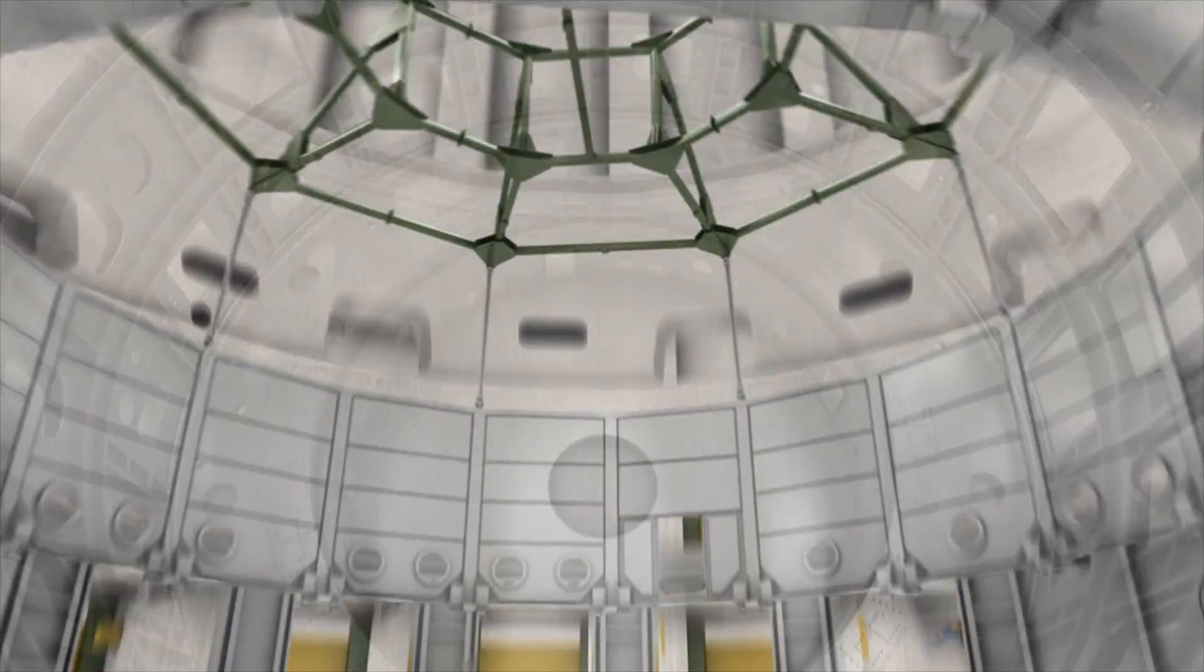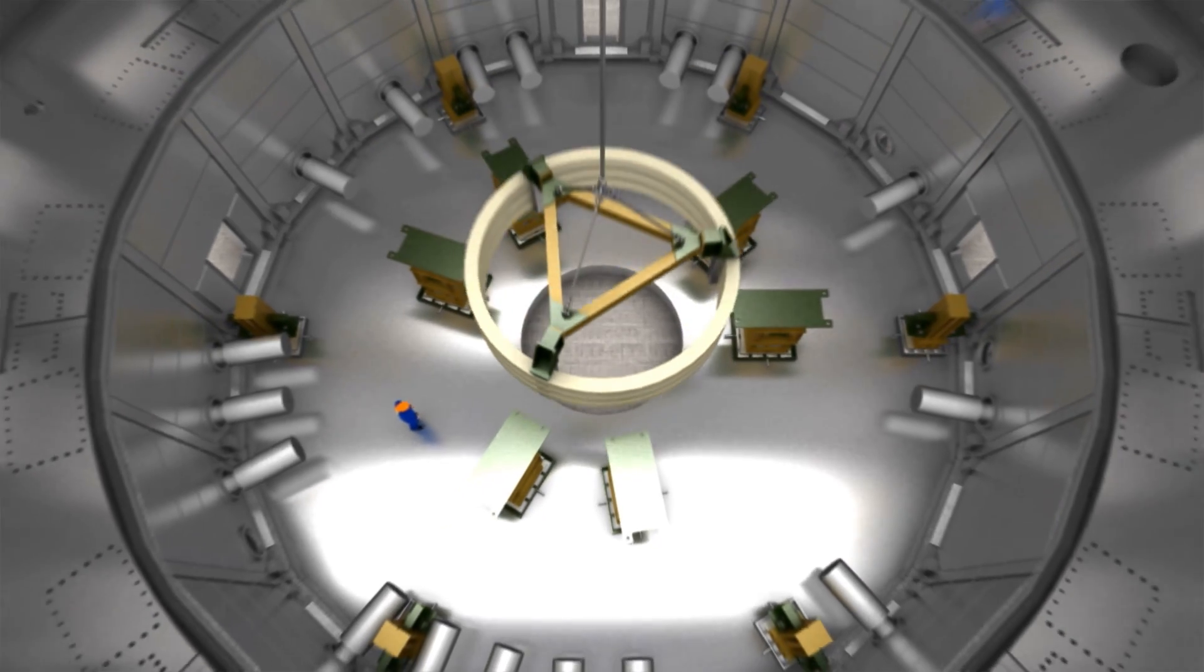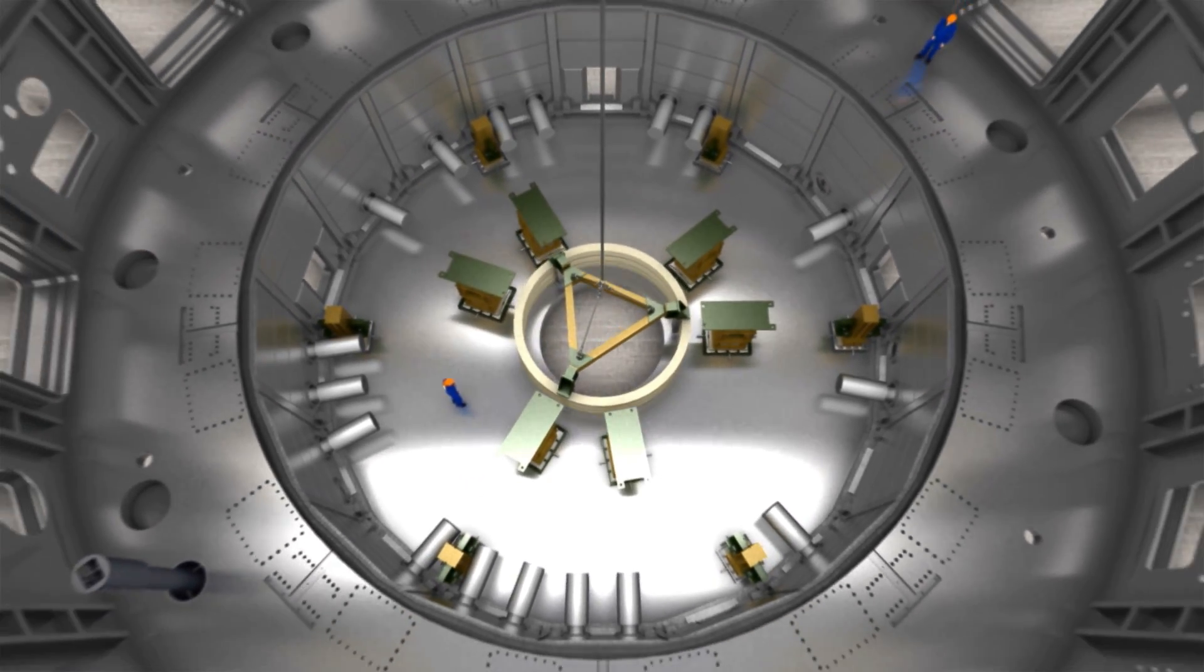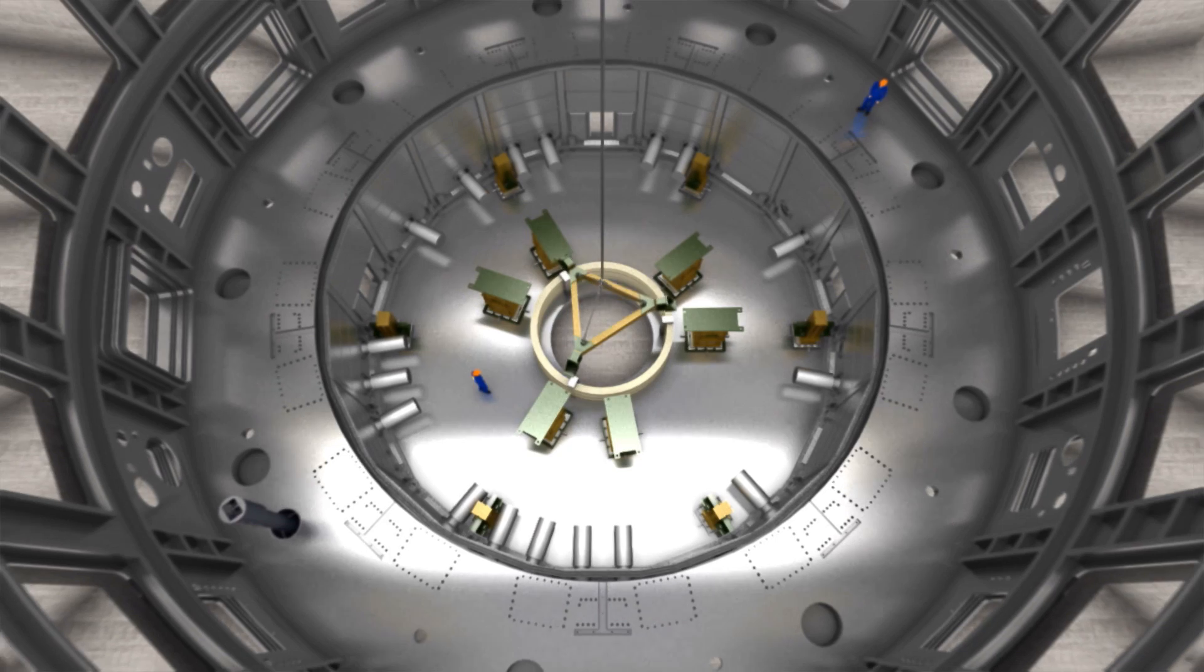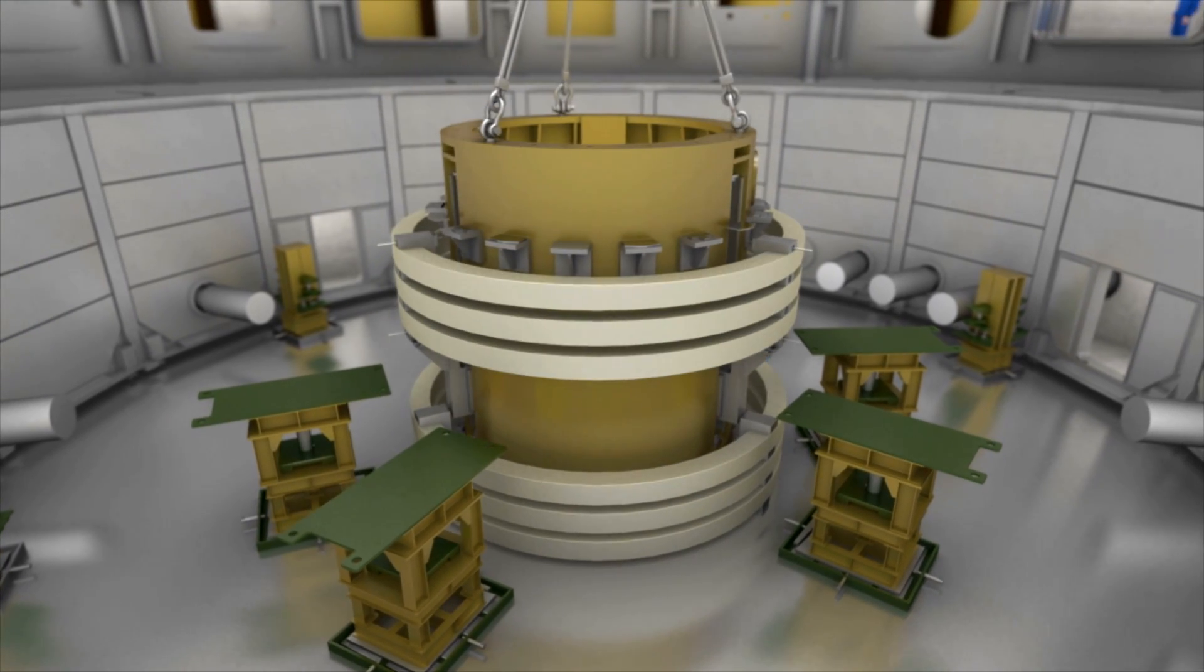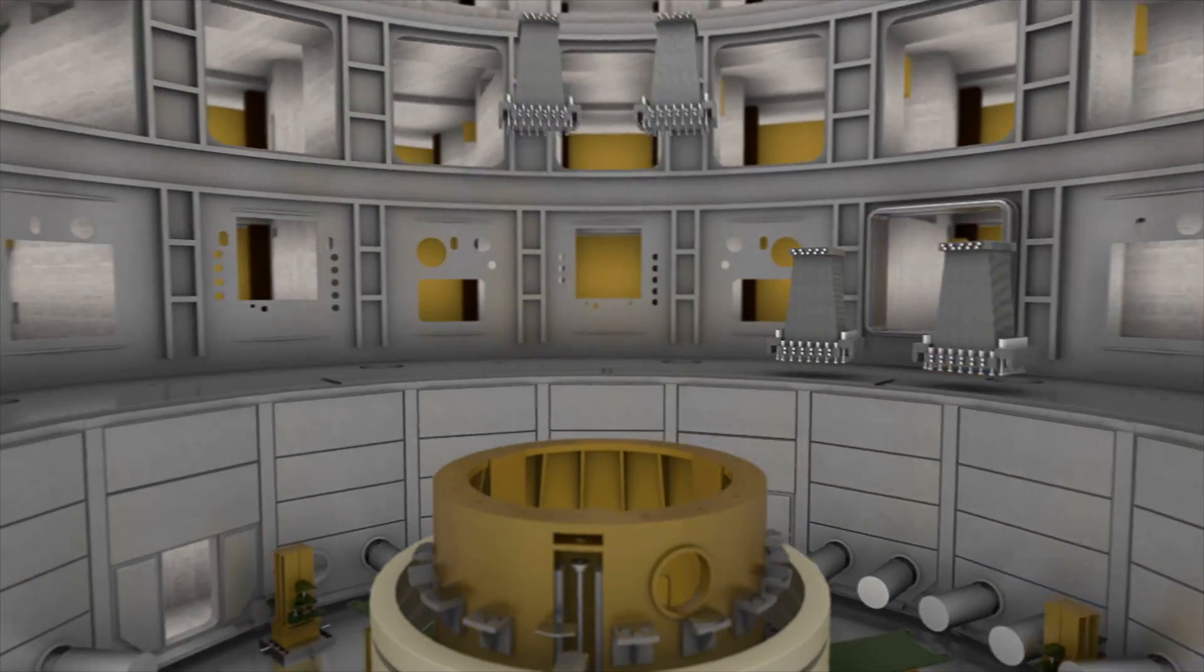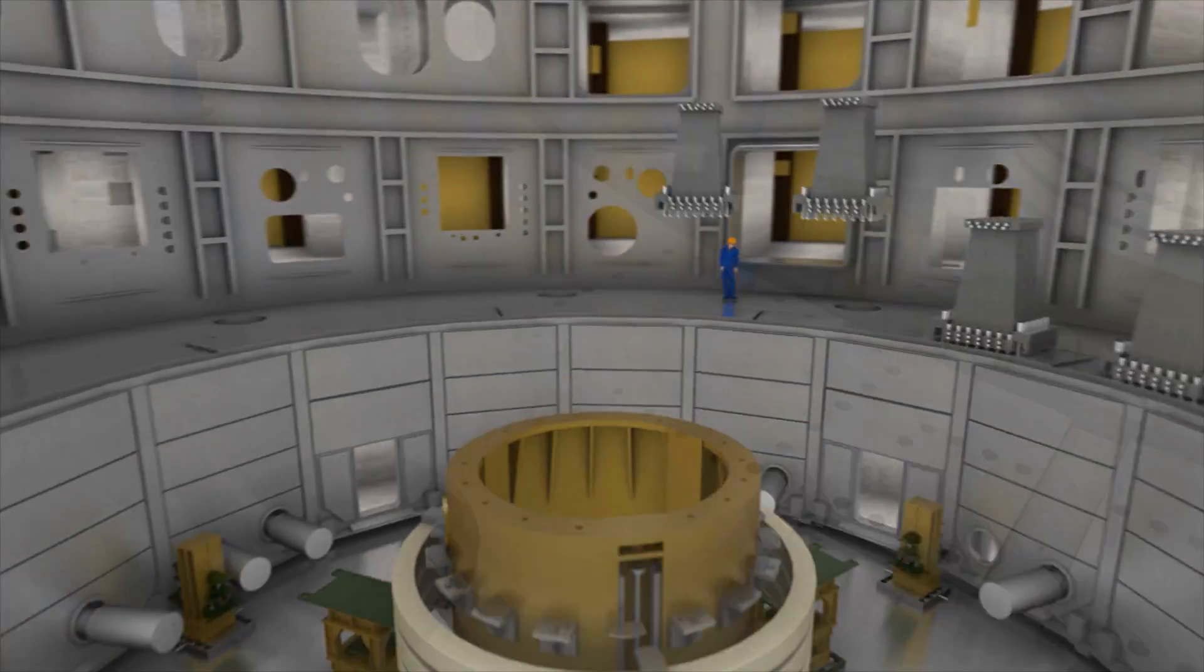Machine installation will continue with the lower cryostat components, the lower thermal shields and the temporary support structures for poloidal field coil number 6. A set of spare pre-compression rings are the next in line, followed by the central support structure and the 18 gravity supports for ITER's huge toroidal field coils.